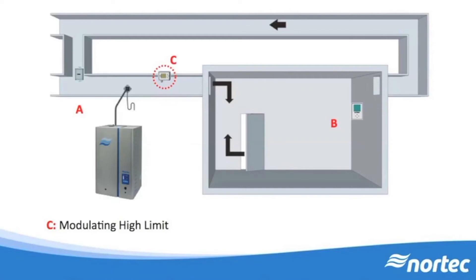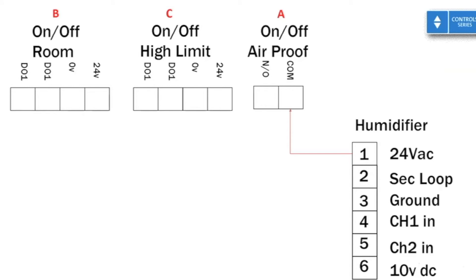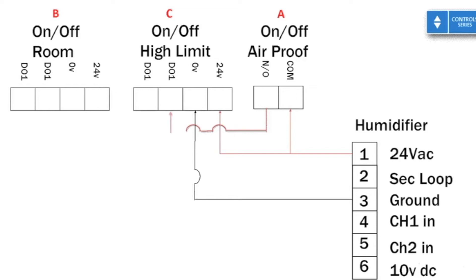The on-off high limit humidistat requires power and ground from the humidifier. We use 24 volts AC from the humidifier, pin 1, wired to the respective terminal on the humidistat, and ground, pin 3, to the respective ground pin. The conductor from the air proving switch is used as the incoming signal to the humidistat relay. Since we've placed a high set point, the humidistat calls for humidity unless we reach too high a reading. The relay output then goes to the final device in the on-off chain: the room on-off humidistat.